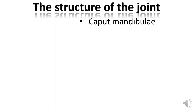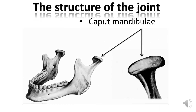The structure of the temporomandibular joint. At the joint, the head of the lower jaw is indicated. The joint head is an ellipsoid-shaped bone formation at the end of the condylar processes of the lower jaw. As you can see on the screen, the head is elongated in the transverse direction and narrowed in the sagittal.